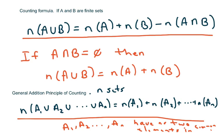Now if A union B equals the empty set, then you don't need to have this part here. And the general addition principle of counting for n sets is here, so you're just counting up the numbers. Remember 'or' means union, so basically when you do this, no two elements have elements in common.